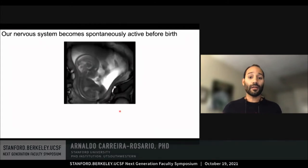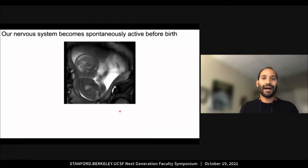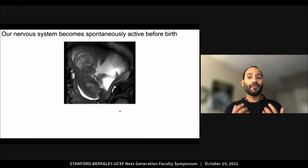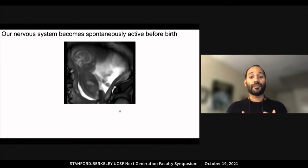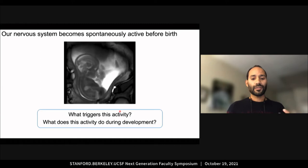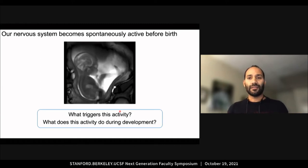All of us, particularly mothers, are familiar with the fact that the human nervous system becomes active before we directly interact with the world. I want to understand what triggers this activity and what this activity does during development.